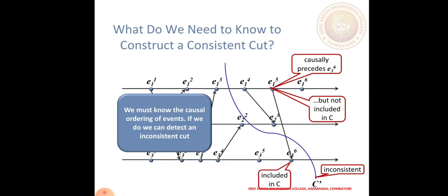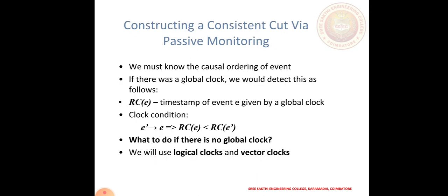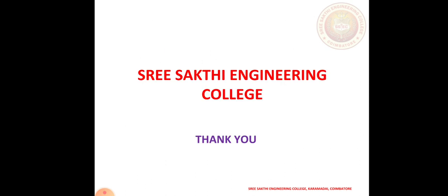What we need to know is the cuts constraint. We have to know the causal ordering of events. If we do not have the correct ordering of events, we will have inconsistency in cuts. To construct a consistent cuts via passive monitoring, we must know the causal ordering of events. If there was a global clock, we would detect that event following RC of E — the timestamp of the event given in a global clock. The clock condition: E-dash tends to E means RC(E) less than RC(E-dash). As in the Lamport algorithm, C(A) should be less than C(B) — a previous process must send first, then only the upcoming event sends. That means V(A) is always less than V(B).